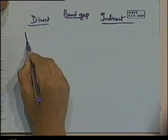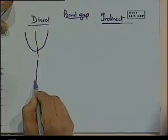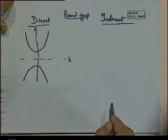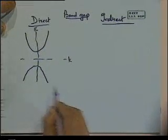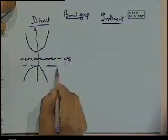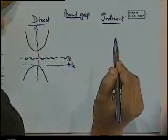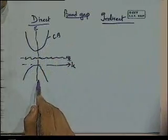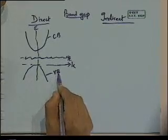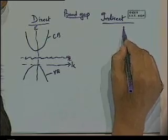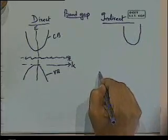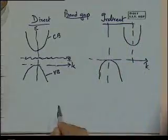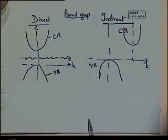In a direct band gap material, the minima in the conduction band lies at the same k-vector as the maxima in the valence band. In an indirect band gap material, the k-vectors are very different for the conduction band minima and valence band maxima. Since k represents momentum — by the relation p = h-bar·k — this energy-versus-k diagram is also effectively an energy-versus-momentum plot.